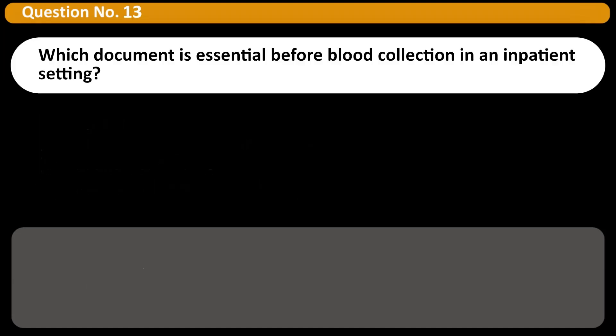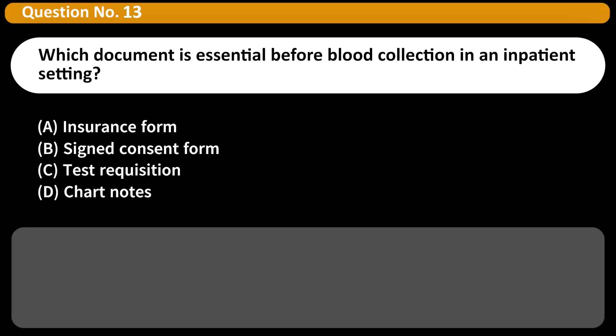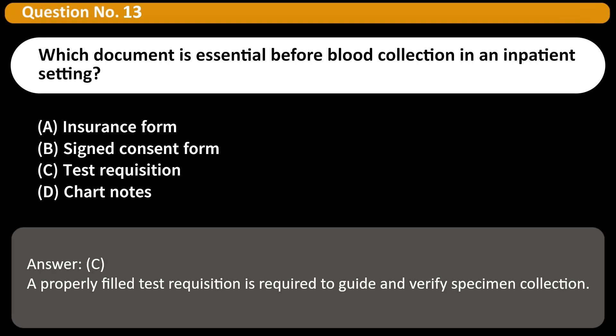Which document is essential before blood collection in an inpatient setting? A. Insurance form. B. Signed consent form. C. Test requisition. D. Chart notes. Answer: C. A properly filled test requisition is required to guide and verify specimen collection.